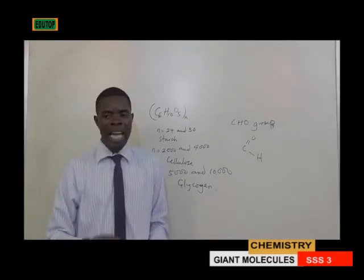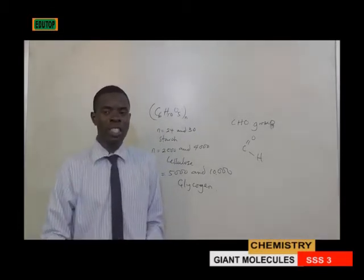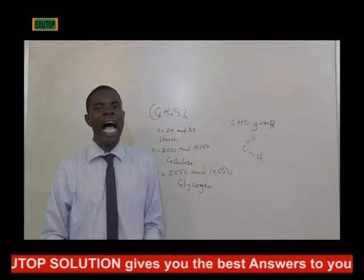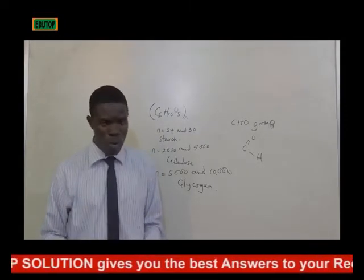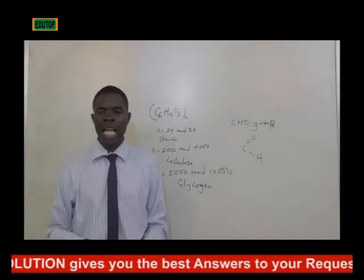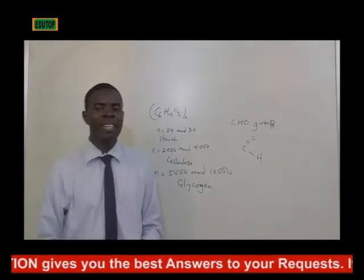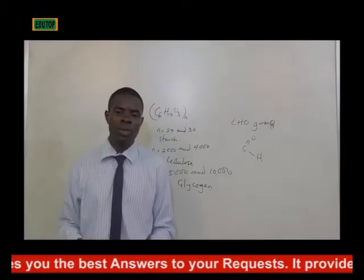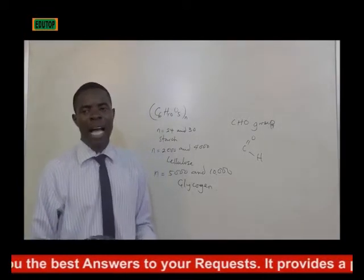So on hydrolysis of starch, you have an intermediate product which is dextrin. On further hydrolysis, it yields maltose and glucose. Now, how can we test for sugars and starch?